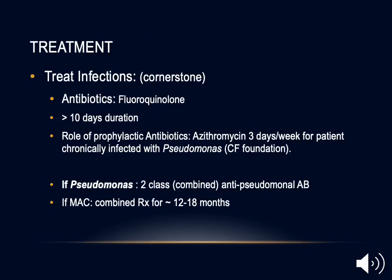The cornerstone of treatment is treating the underlying infection. Antibiotics including fluoroquinolones should be given for at least 10 days. If Pseudomonas infection is identified by sputum culture, two classes of anti-pseudomonal antibiotics should be combined. For mycobacterium avium complex, combined treatment for at least 12 months is required. The role of prophylactic antibiotics is questionable, but the Cystic Fibrosis Foundation agrees that cystic fibrosis patients currently infected with Pseudomonas can benefit from azithromycin three days per week chronically, which helps decrease episodes of acute bronchiectasis exacerbation.